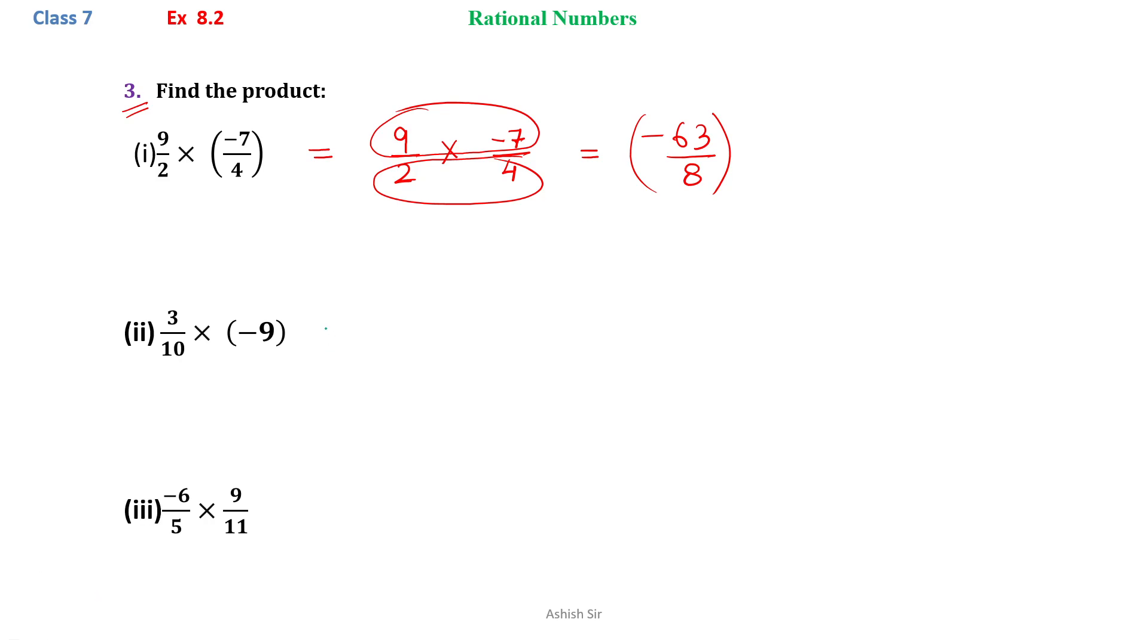Similarly, the next one here, we have 3 by 10 multiply by minus 9. 9 is not cancellable by 10, 3 is also not cancellable, so we will just multiply numerator with numerator, we will get minus 27 by 10.